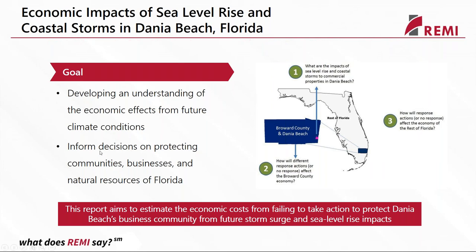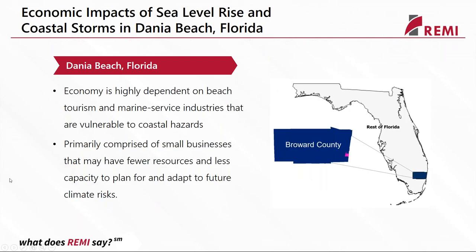Before diving into results, I want to provide a little more context about the specific study region. This was in Dania Beach, Florida, which is in Broward County in South Florida. Their economy, as you might expect — similar to many communities in Florida and elsewhere — is fairly dependent on tourism and related marine service industries, which are very vulnerable to the types of coastal hazards we're talking about. This is compounded by the fact that a lot of businesses in these communities are smaller businesses that may have fewer resources and are more in need of protection to plan for and adapt to the risks they face.